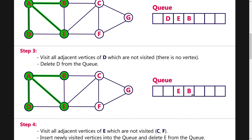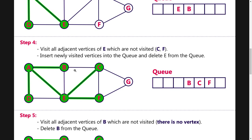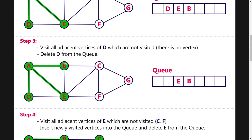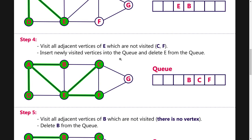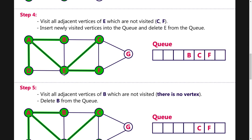We will visit E. If we look at E, there is an adjacent non-visited node. D has a green color indicating it is visited. Looking at E's adjacent nodes, C and B are non-visited. We insert C and B. Then we delete E.